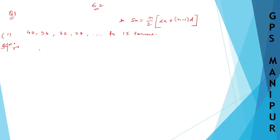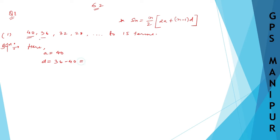So what we need to find is S15. First, what is A here? A is equal to 40. What will be D? D is equal to 36 minus 40, that is the second term minus the first term, so 36 minus 40 equals minus 4. And n — it is 15 terms, so n is 15.